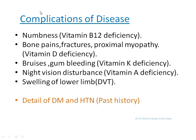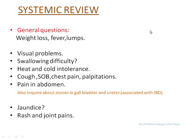This is the time to ask about the complications of the disease. Ask if there is any numbness for vitamin B12 deficiency. Ask about bone pains, any history of fractures, difficulty in standing from a squatting position for vitamin D deficiency. Also ask about bruises and gum bleeding for vitamin K deficiency. Ask about night vision disturbance, which may occur in vitamin A deficiency. Remember that in inflammatory bowel disease there is a possibility of DVT, so ask the patient if there is any swelling of one limb along with the loose motions.